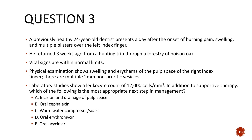Question 3: A previously healthy 24-year-old dentist presents the day after onset of burning pain, swelling, and multiple blisters over the left index finger, with a history of a hunting trip through poison oak. Examination shows swelling and redness of the pulp space with multiple 2 mm non-pruritic vesicles. In addition to supportive therapy, the most appropriate next step is E — oral acyclovir. The non-pruritic vesicles around the pulp space are suggestive of herpetic whitlow, and oral acyclovir can help reduce the duration of symptoms.